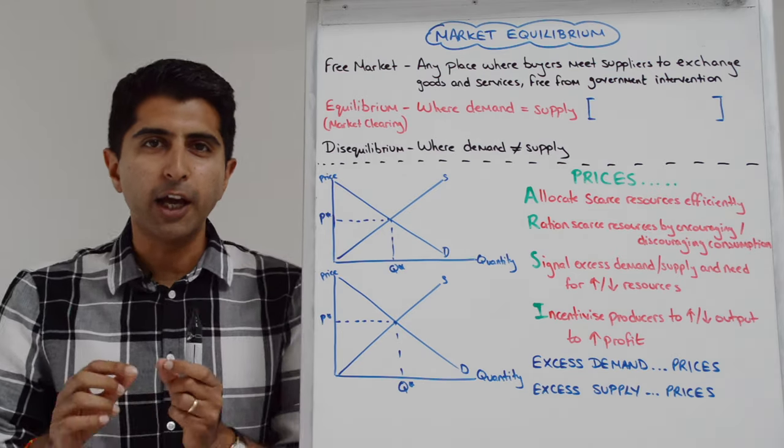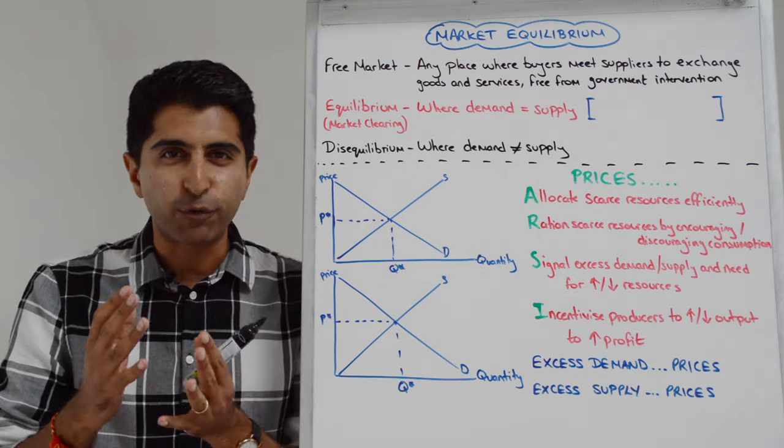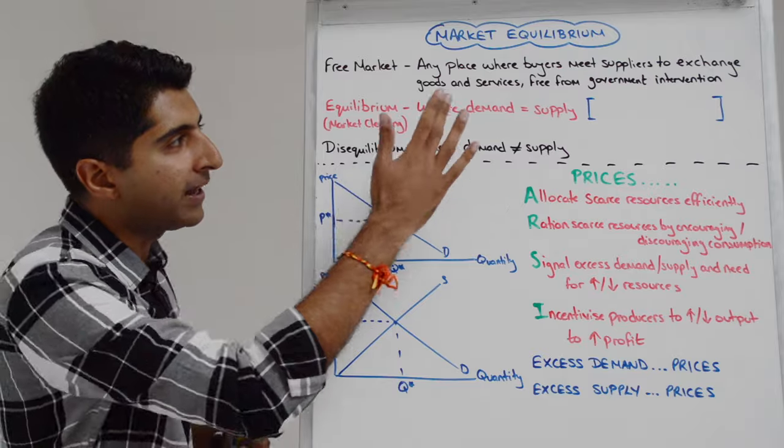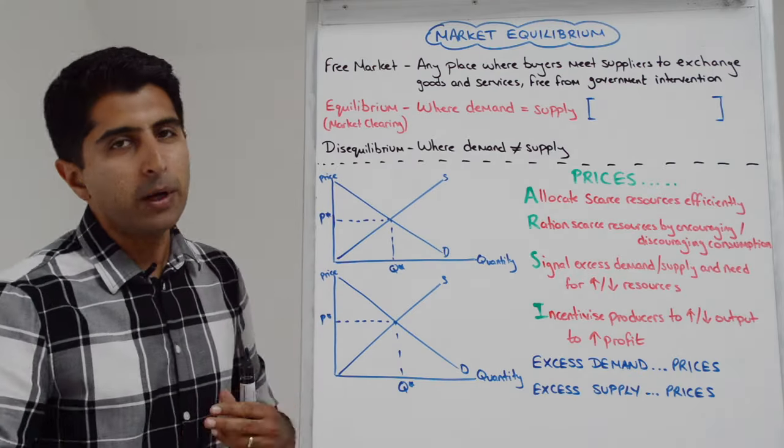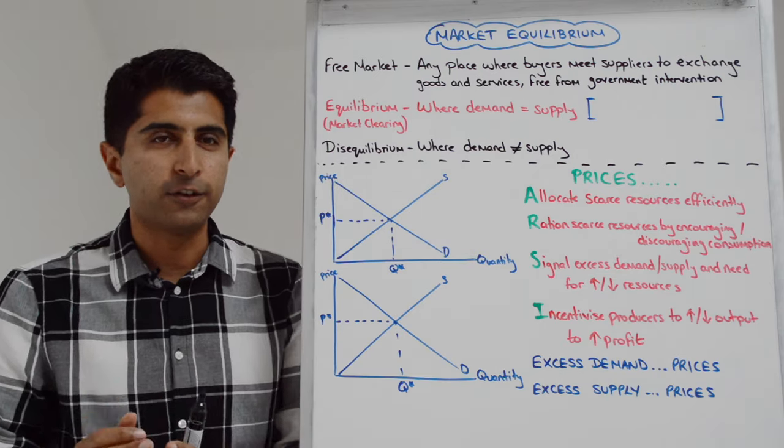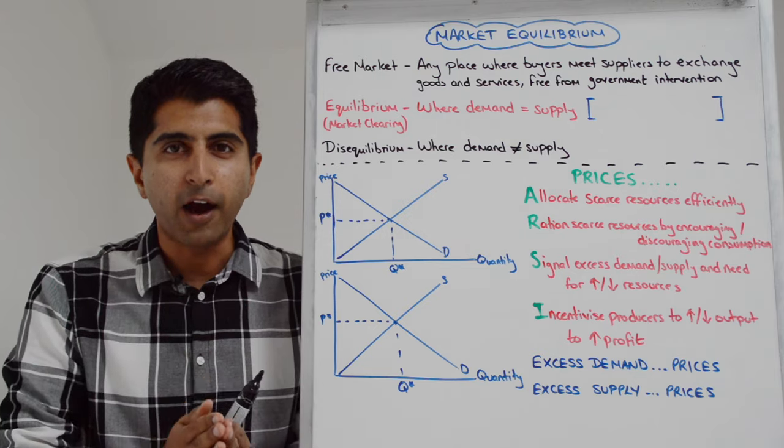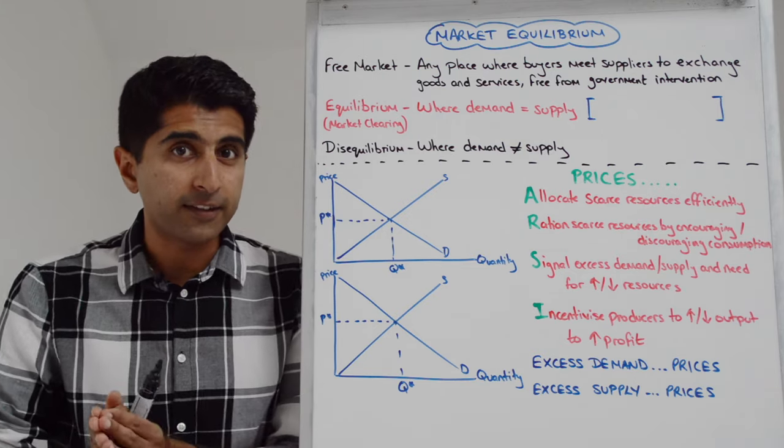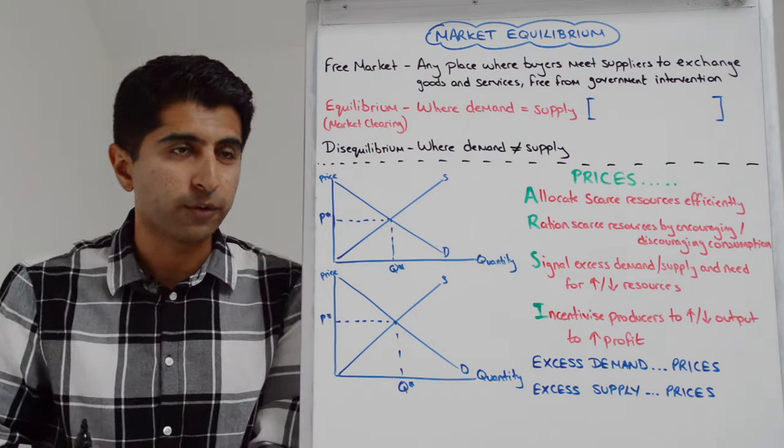Equilibrium in a market occurs where demand equals supply. Equilibrium is just the Greek word for balance, so there is balance here between demand and supply when they are equal. Equilibrium is also known as the market clearing position, so at this point where demand equals supply, the market is clear of excess demand and of excess supply, whereas disequilibrium occurs where demand does not equal supply.